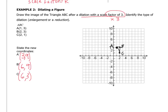Let's graph it. I've got one point at (3, 9) — that's A prime. Then B prime at (6, 9), and C prime at (6, 3). The shapes should look the same, but obviously one is larger than the other. We have the new coordinates, and we just have to identify whether it was an enlargement or a reduction. Since the shape got larger, it is an enlargement.